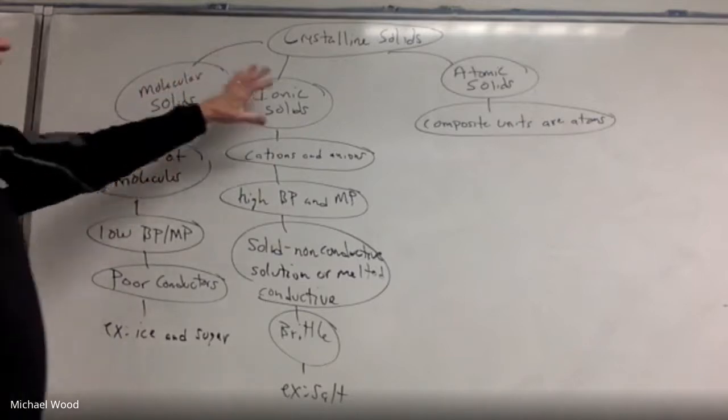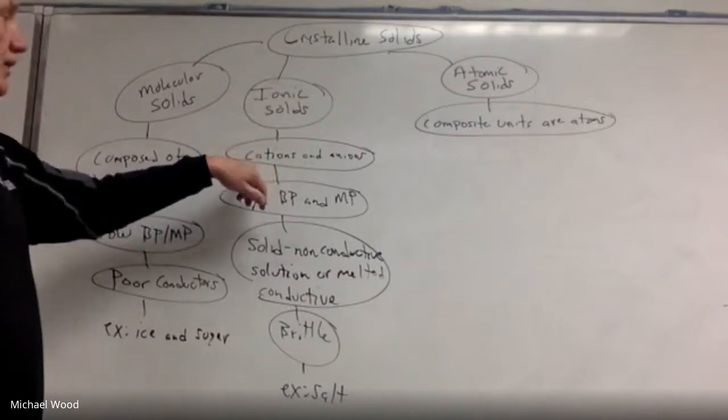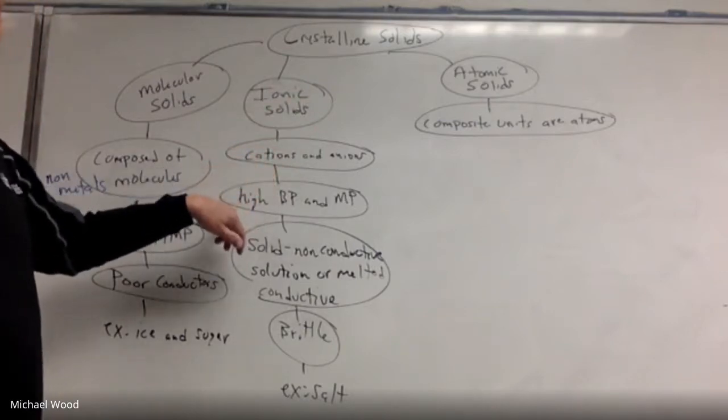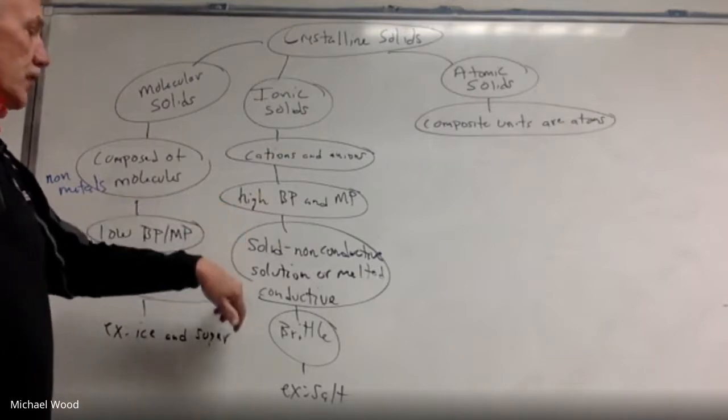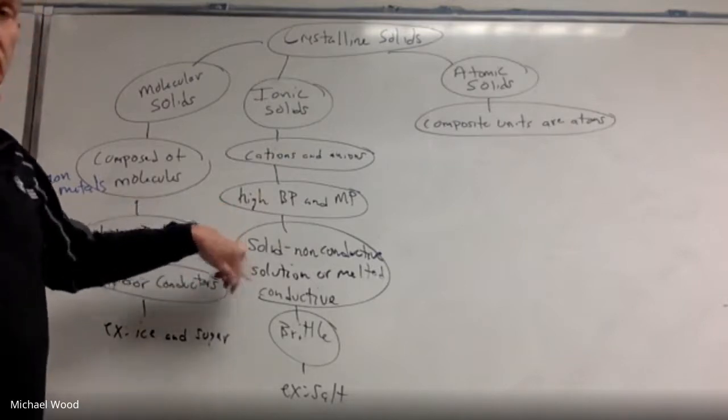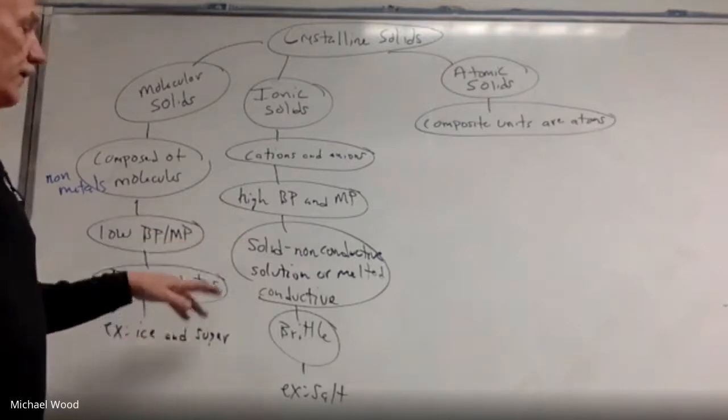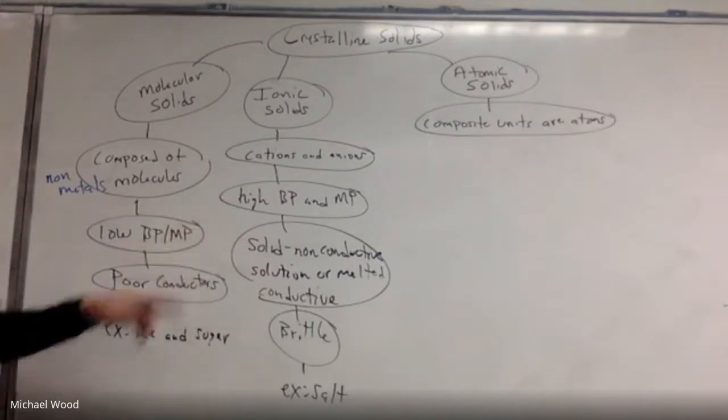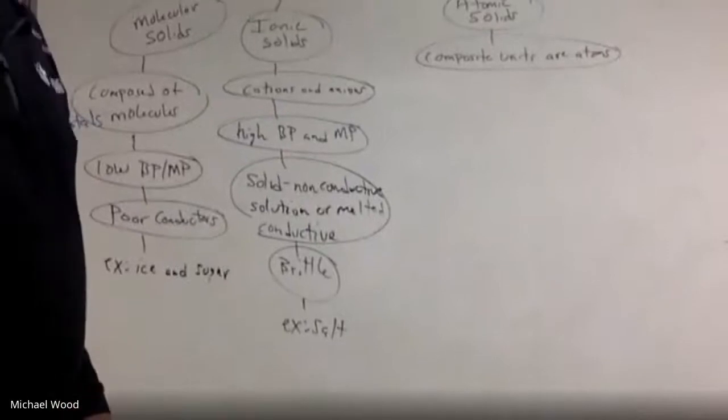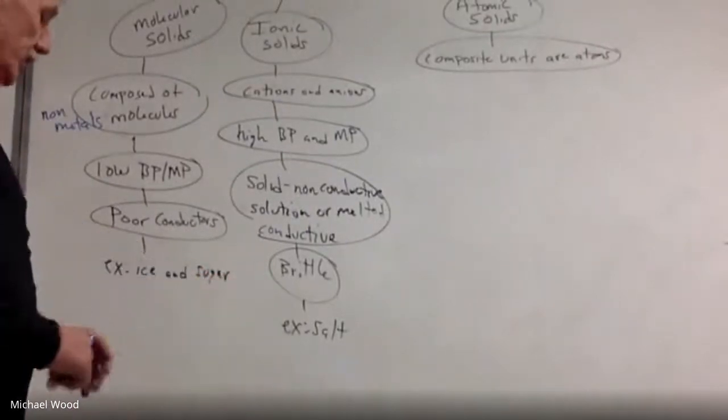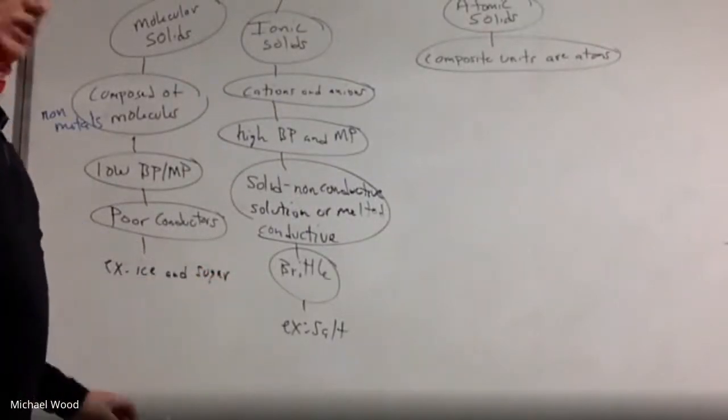And then we have ionic solids. So we have cations and anions. They have a high boiling point and melting point, so that tells me they're held together very strong. As a solid, they don't conduct electricity because the ions are stuck in place. As a solution or melted, they are conducted because the ions are free to move around. They're brittle, and an example of that is salt.